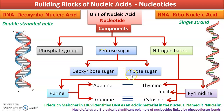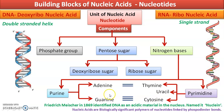One difference lies in the pentose sugar — though both are 5-carbon sugars, one is deoxyribose and the other is ribose. For nitrogen bases, DNA has thymine and RNA has uracil; the other three bases are common to both. When the helix forms, there are two strands, and one base on one strand pairs complementarily with a base on the other strand. A purine always pairs with a pyrimidine. In DNA, adenine pairs with thymine, and guanine pairs with cytosine.